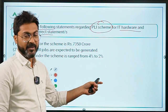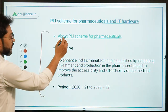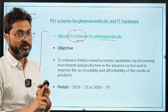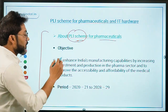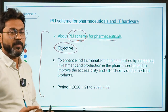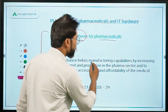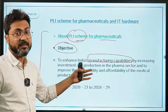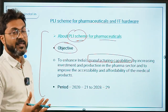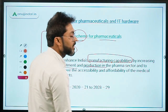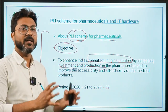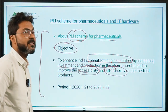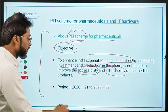The PLI scheme for pharmaceuticals was approved by the Union Cabinet. The basic objective of PLI schemes is to boost manufacturing capabilities. For the pharmaceutical sector specifically, the objective is to boost manufacturing capabilities by increasing investment and production in the pharma sector, and also to provide accessibility and affordability to medical products. The implementation period is from 2020-21 to 2028-29.